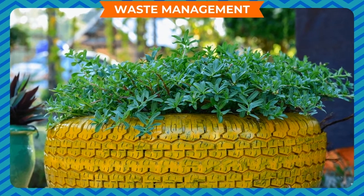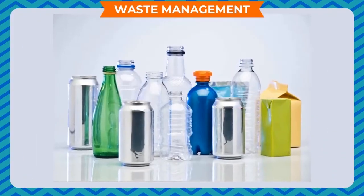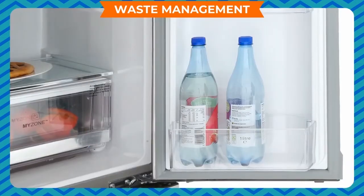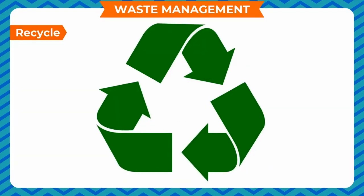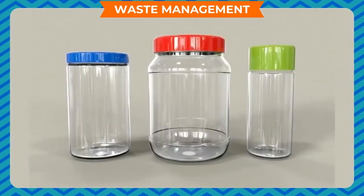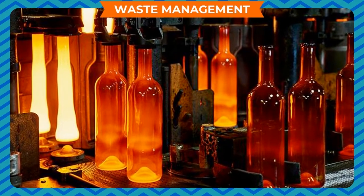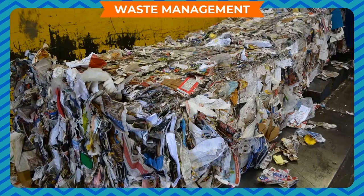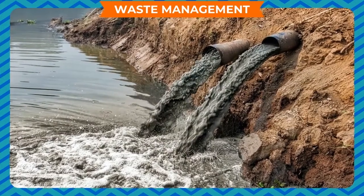We should try to reuse items where possible. If we buy mineral water or soft drinks, we should reuse those empty bottles for storing other liquids like water or oil — they can be used as fridge bottles. We should use cloth bags instead of polybags. Waste materials can also be recycled. Glass can be recycled easily — melted and remolded into new shapes. Plastic, metals, and paper can also be recycled on a large scale. Sewage water is also being recycled to provide clean water.